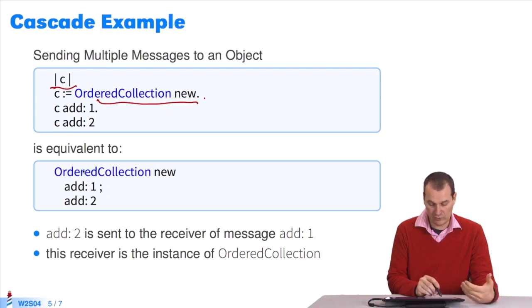I create it, then add the first message, add one, to add an element. The semicolon means this message must be sent to this collection.